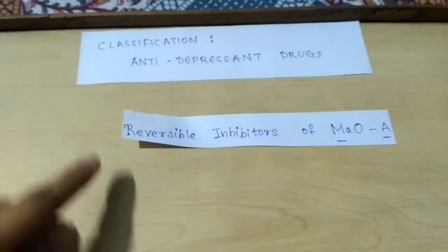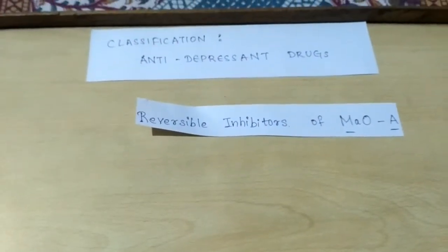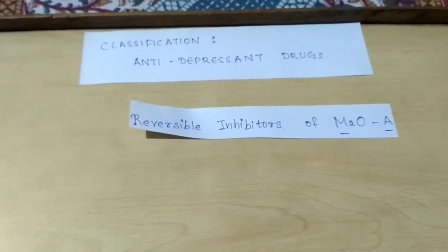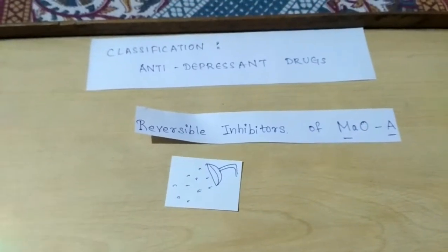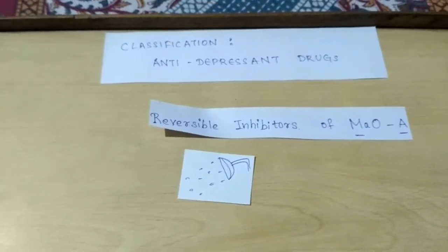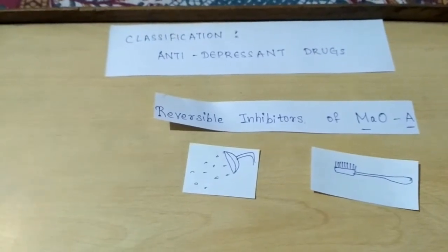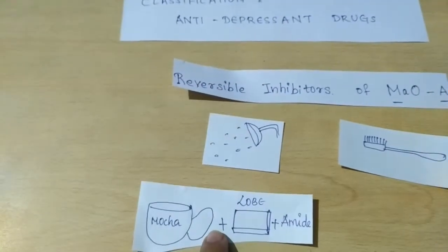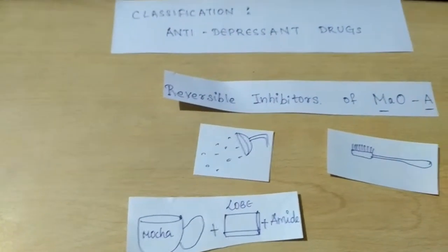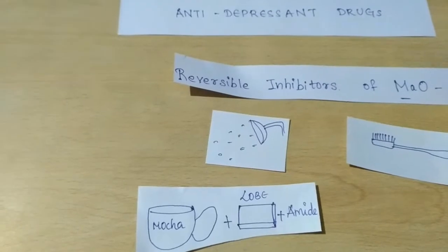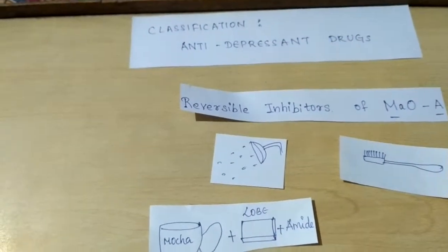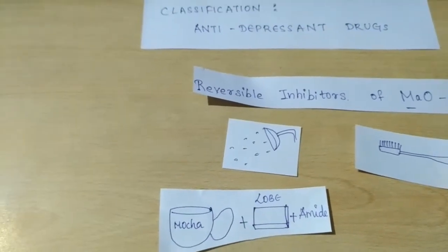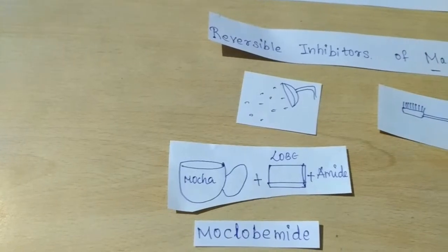Now we will see the reversible inhibitors of the mitochondrial enzyme MAO. It is of two types: A and B. We will see MAO-A inhibitors here. As we said, one should take a bath in the morning or afternoon and should brush their teeth. For taking a bath, they should use a soap which is made up of moclobemide — a soap representing the drug moclobemide.